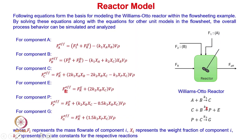In these material balance equations, FI represents the mass flow rate of component I, XI represents the weight fraction of component I, and KJ represents the rate constant for the respective reactions. The rate constants K1, K2, K3 can be written in Arrhenius form to capture how rate constants depend on temperature.